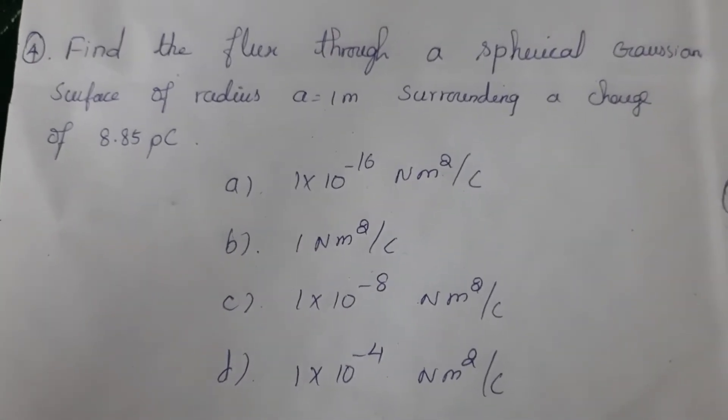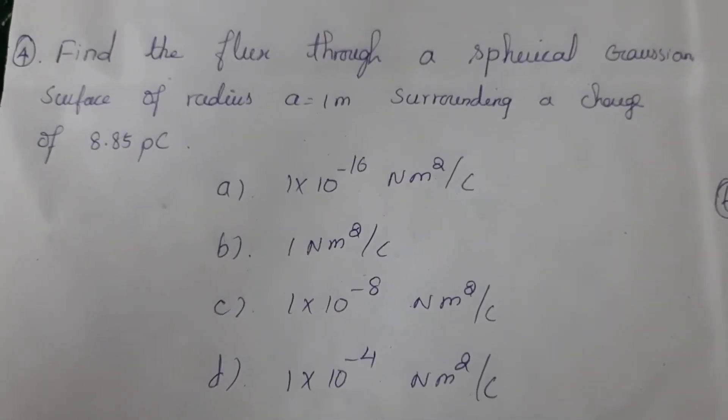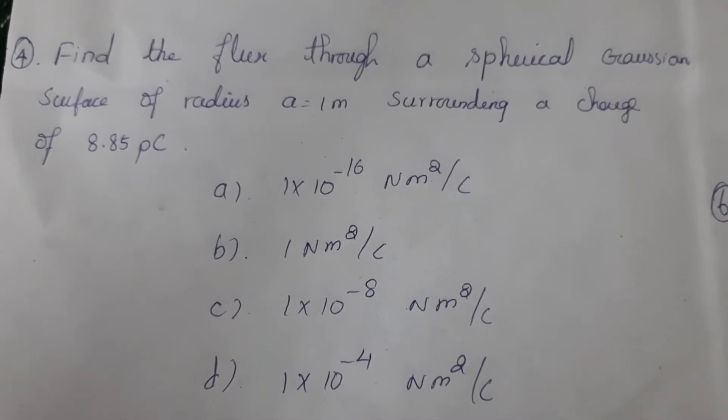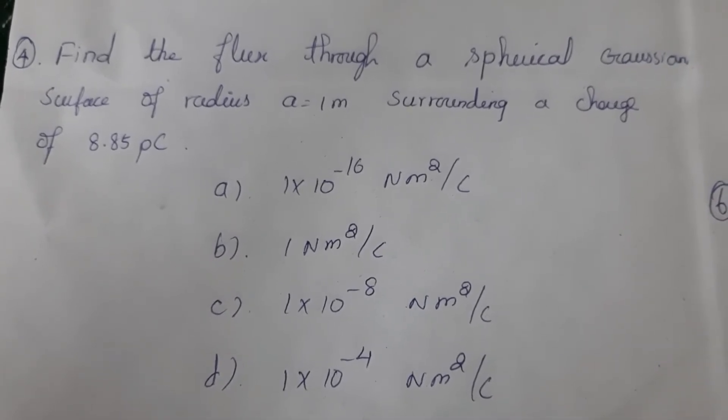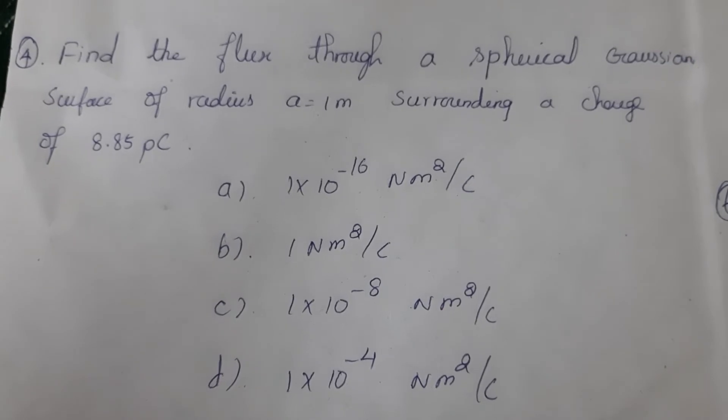Fourth question: Find the flux through a spherical Gaussian surface of radius a = 1 meter surrounding a charge of 8.85 picocoulomb.